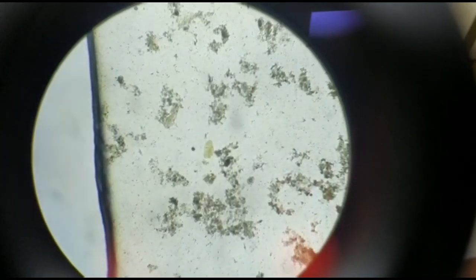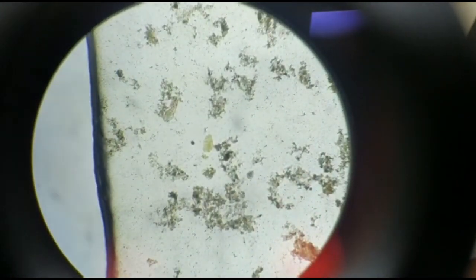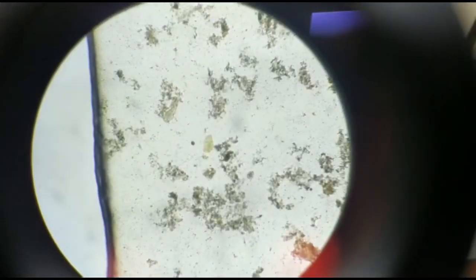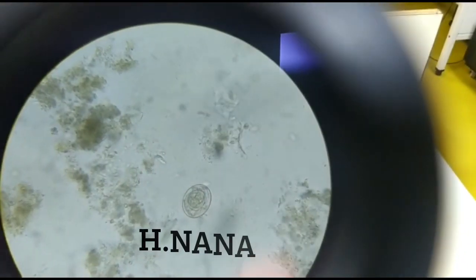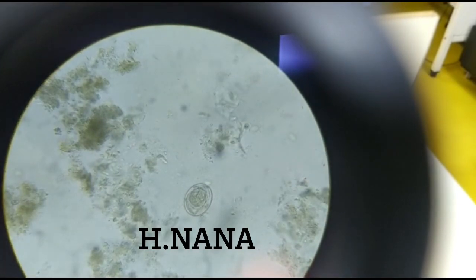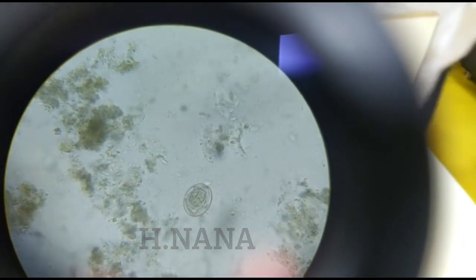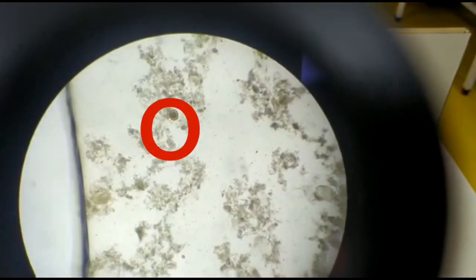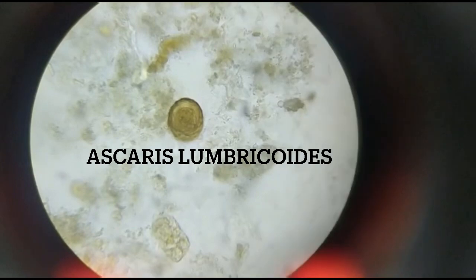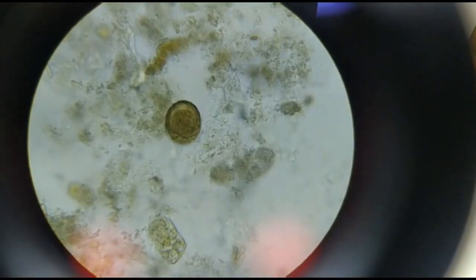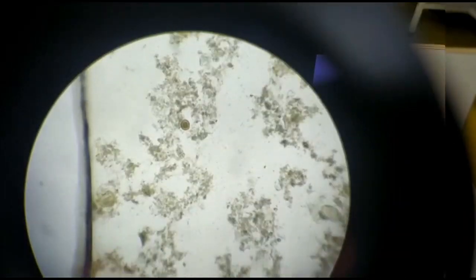Start from one corner and let's see which all eggs we can see. Oh, just see, we found egg of H. Nana. Under 40x, the egg can be better appreciated. Let's move further. Yes, this is an egg of Ascaris lumbricoides. Under 40x, the egg characteristics can be appreciated. The egg is also bile stained. Then we continue.